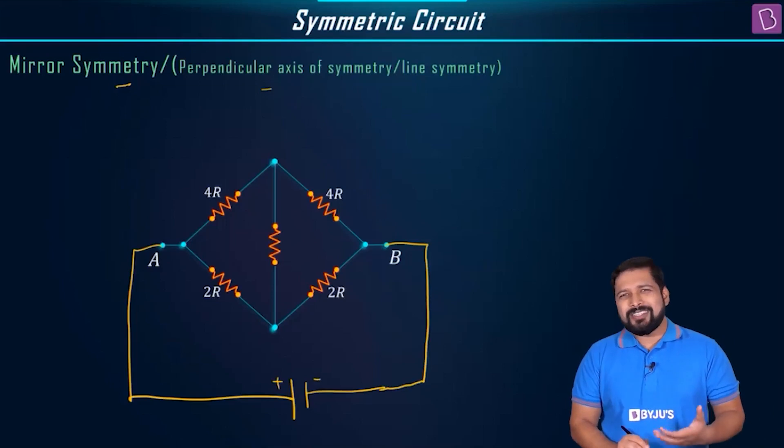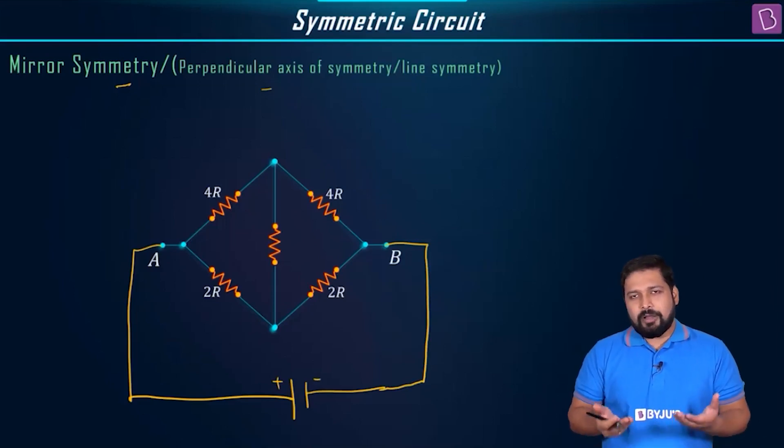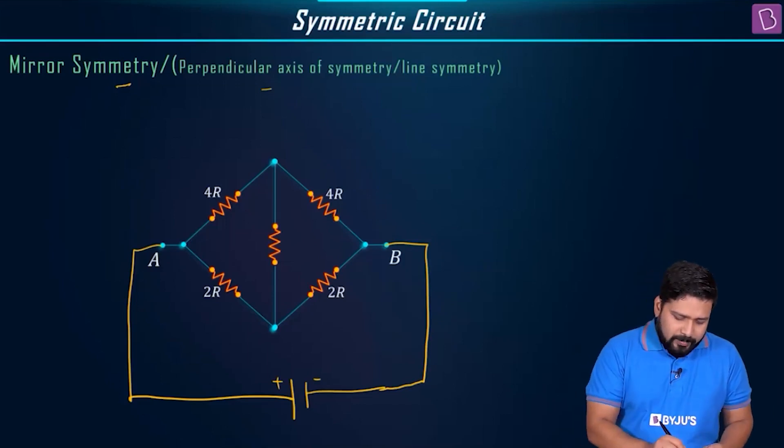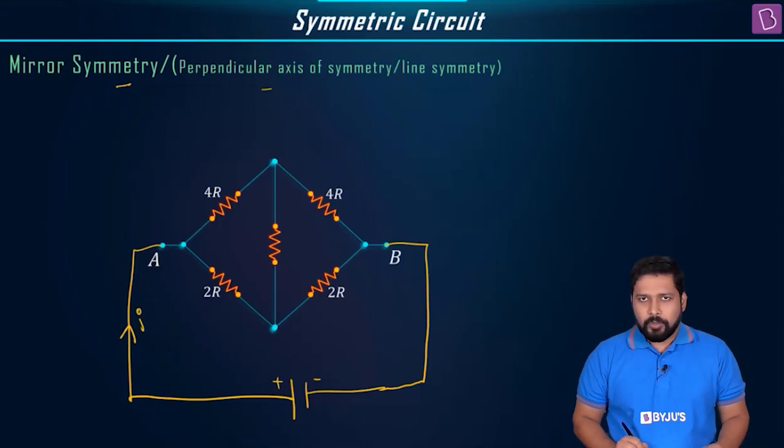Later on, we'll just skip that part because after a couple of problems, we'll get so used to it that we'll understand that it is connected across a battery. Now we'll imagine that, let us say, I amount of current is flowing through this. When you look at this circuit, you need to find the net equivalent resistance across A and B.